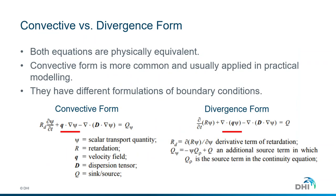Convective and divergent form — both equations are physically equivalent. However, the convective form is more common to use and is usually applied in practical modeling. They have different formulations of the boundary conditions, which comes from how the mathematical terms are formulated — the convective term or the divergent term, highlighted here with the red line.